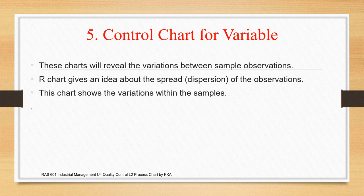Control charts for variables reveal the variation between the sample observations. Where a number of samples are taken into consideration, we first take the mean, then find out the control limit — upper as well as lower control limit — the variation that is acceptable up to permissible limits. The R chart provides the idea about the dispersion of the data from its mean value, showing the variation within the sample.